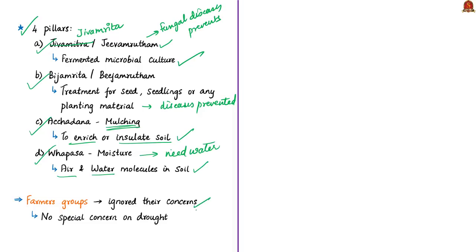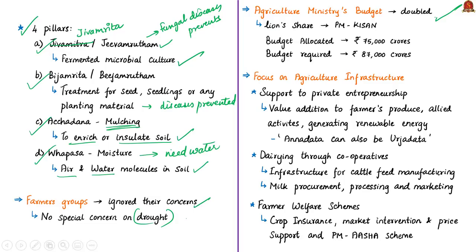After these announcements, farmers groups complained that the reelected government's first budget has ignored their concerns. They noted that when the interim budget was presented in February, there was a clear focus on farmers welfare because of the upcoming Lok Sabha elections. Five months later, the reelected government's first budget has ignored their concerns, as elections are over. This complaint is because half the country is in the grip of drought, and no special concern or commitment has been given for that by the government. However, the agricultural ministry's budget has been almost doubled — it is ₹1.38 lakh crore this year.